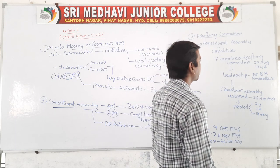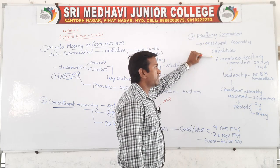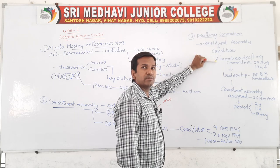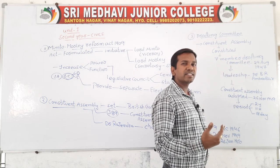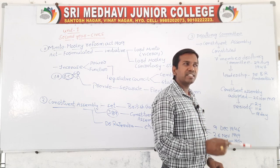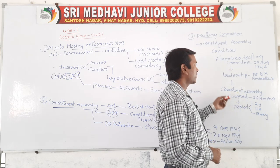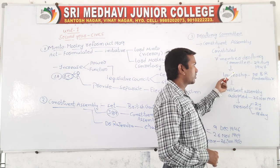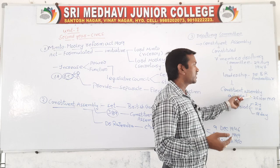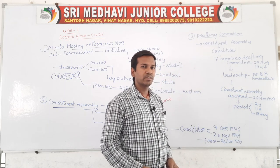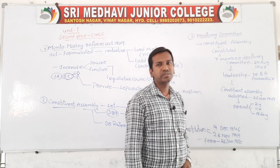The third important topic is the Drafting Committee of the Constitution. The Constituent Assembly constituted seven members called the Drafting Committee. The Drafting Committee was set up on 29th August 1947, and the responsibility was given to them to draft the constitution by copying and adapting provisions from various countries. The head of the Drafting Committee was Dr. B.R. Ambedkar. The Drafting Committee completed its report and submitted it to the Constituent Assembly, which adopted the constitution on 26th November 1949. The entire preparation took nearly two years, eleven months, and 18 days.